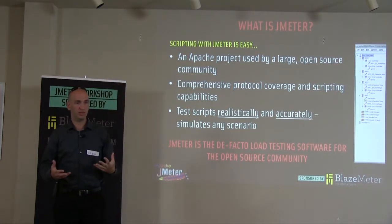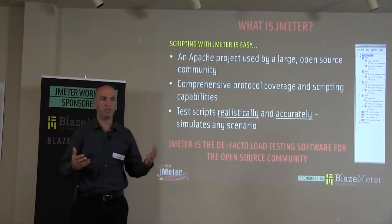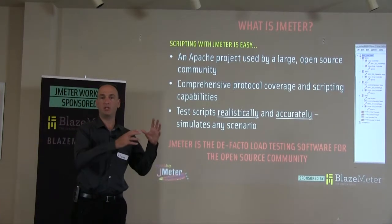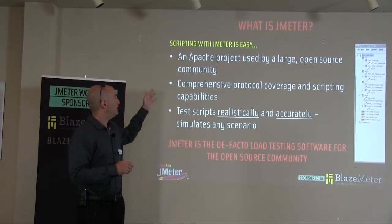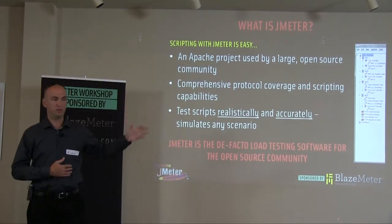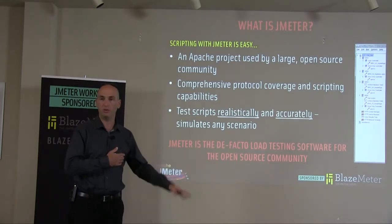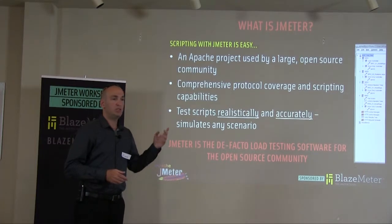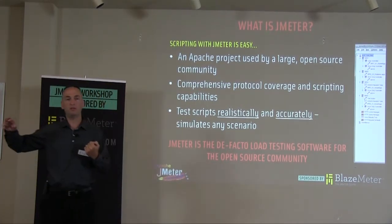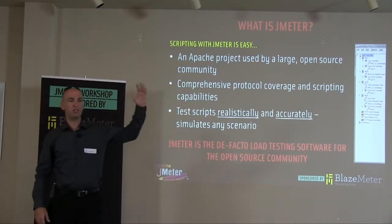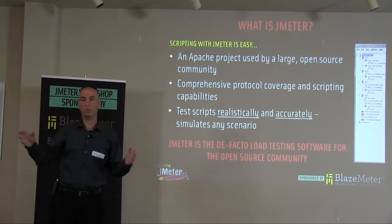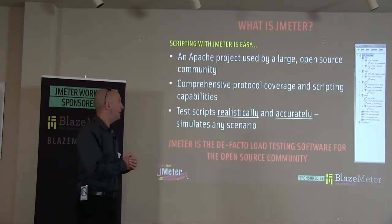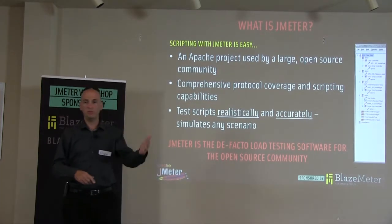JMeter is basically an Apache project. Why does it matter? Because Apache — you say internet, you say Apache. This means that every protocol that runs in the Apache community of projects finds its way into JMeter. So if you need a web service of some sort, it's probably there — an email protocol, SMTP, SNMP, whatever, it's probably there. JMeter was previously a sub-project under Jakarta, but recently it became a full Apache project, meaning more developers are developing JMeter and more users are using it.